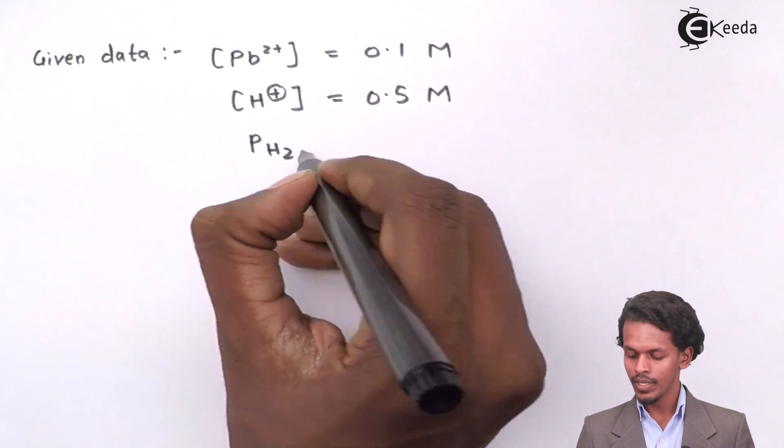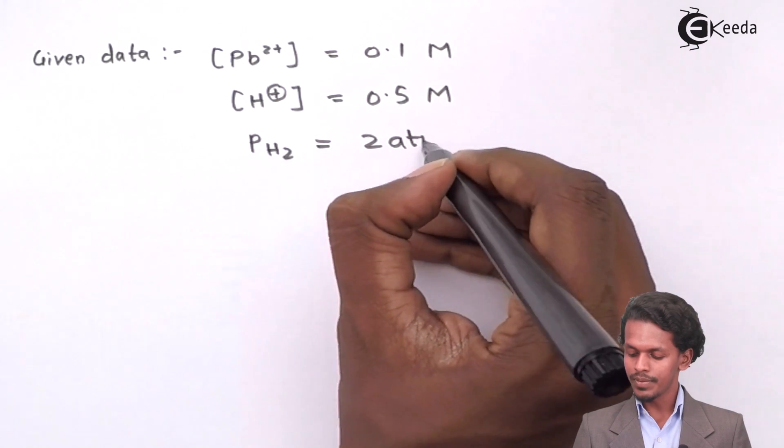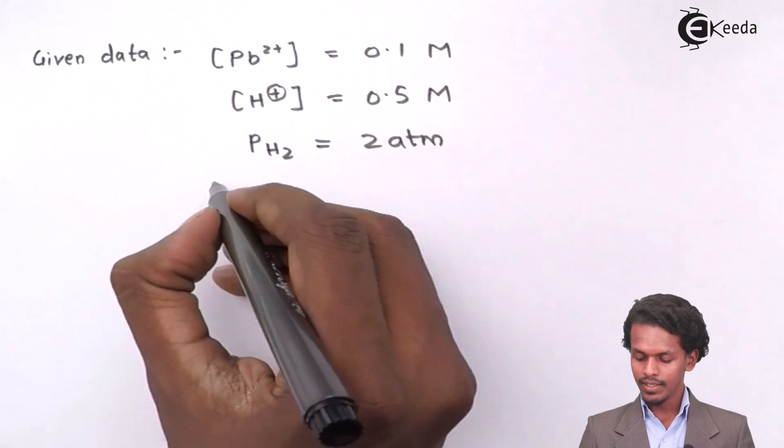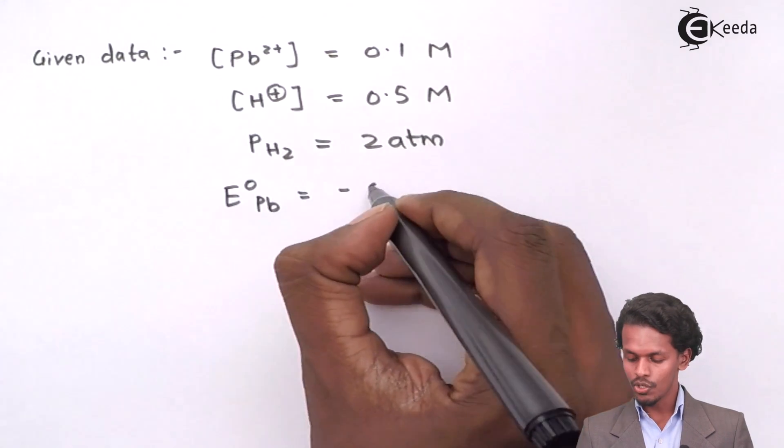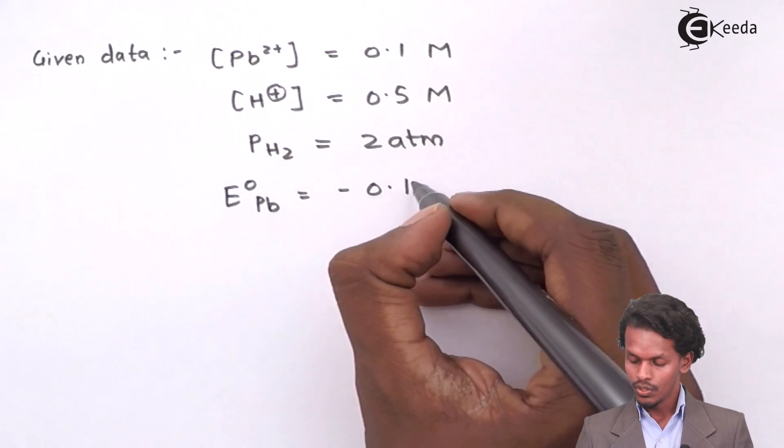The pressure of H2 is given as 2 atmospheres, and the E° of Pb is given as minus 0.126 volt.